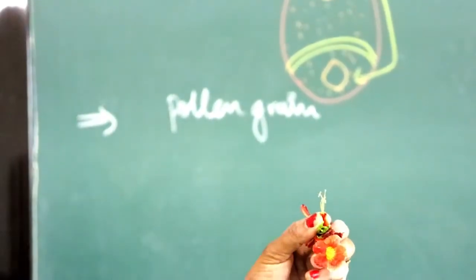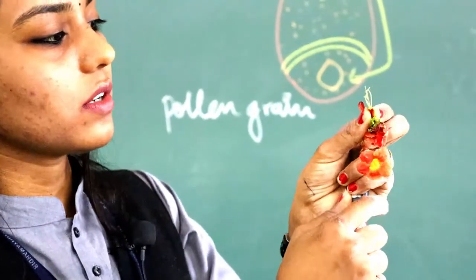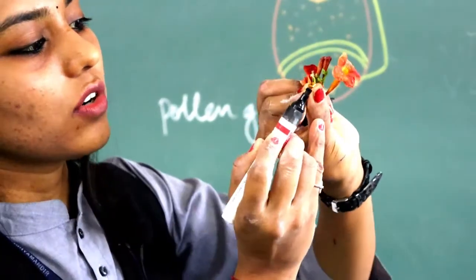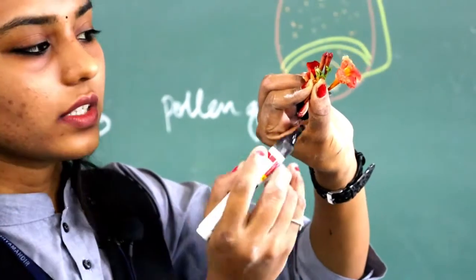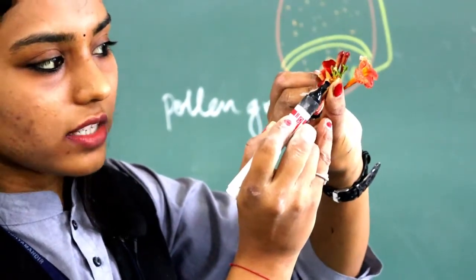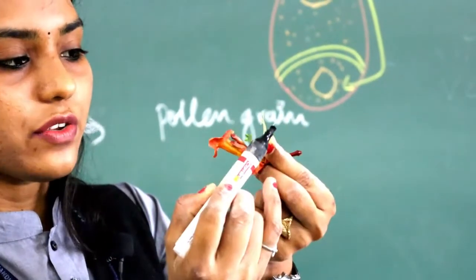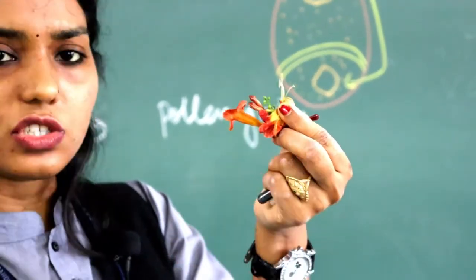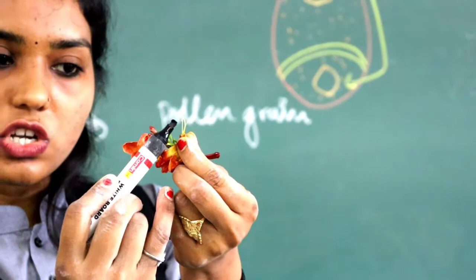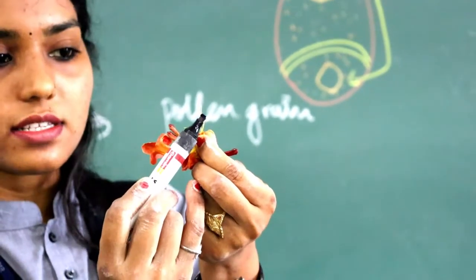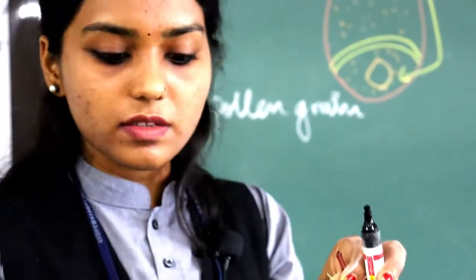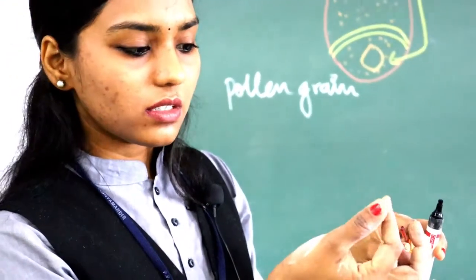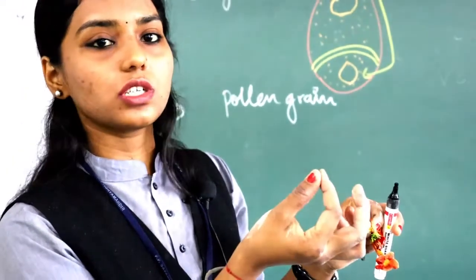Here you can see — these are called as anthers. The stock-like structure, the yellowish structure you can see, is called as filament, and this part is the anther. Now if I rub this, I will get a yellow powdery substance stuck on my hand.